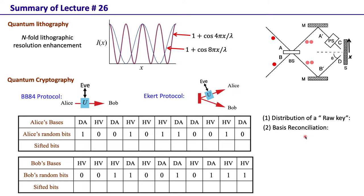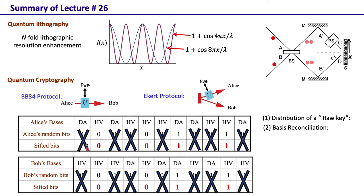The next step in quantum cryptography is what's called basis reconciliation. In this step Alice and Bob compare which basis each chose in each instance — they compare only the basis, not the bits. If they find that in a particular instance they happened to choose different bases, they reject those instances. Only in instances when they chose the same basis do they keep those measurement results. When they choose the same basis their measurement results are completely and perfectly correlated, and they generate a shared key — these are called shifted bits.